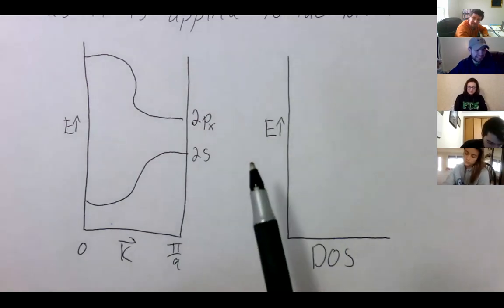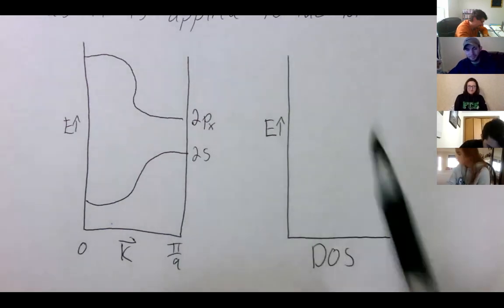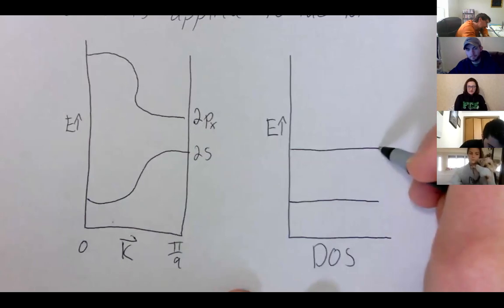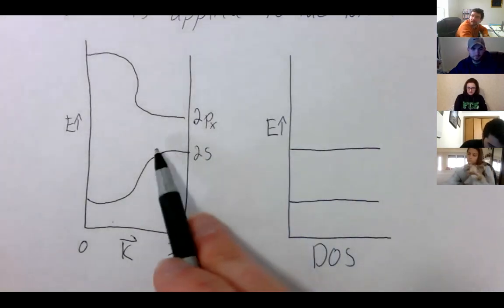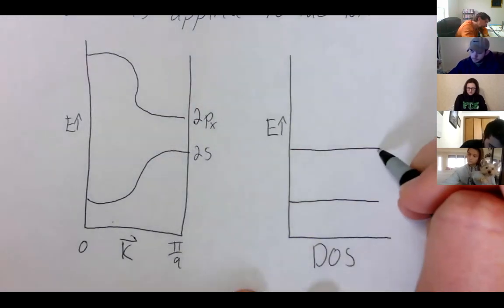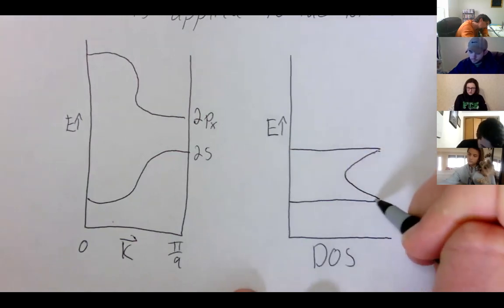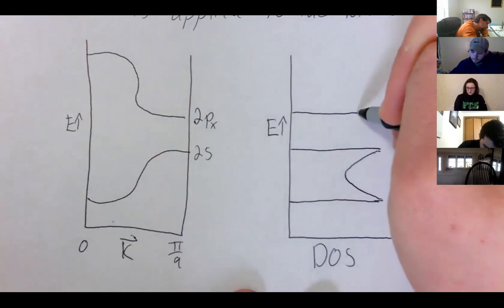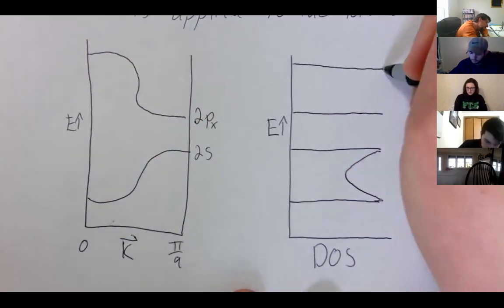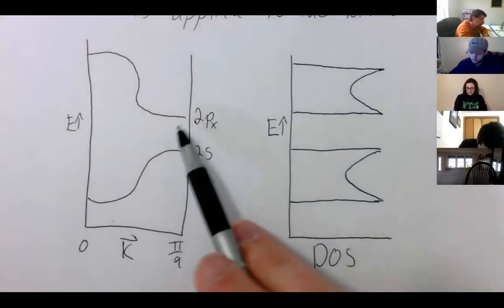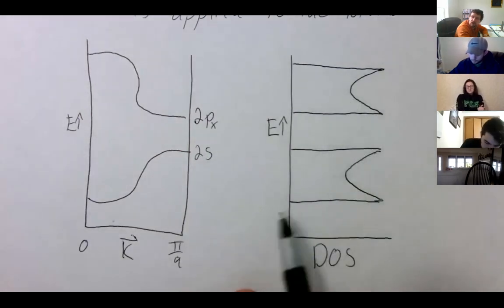The DOS for the 2s is going to spike at the bottom, and at the band edges there will be peaks because there's the most number of states in a very narrow energy window. We'll get another spike at the other band edge. The px band will look exactly the same, and the heights will be the same because each band can hold two electrons, so the number of states should be equal when we integrate.